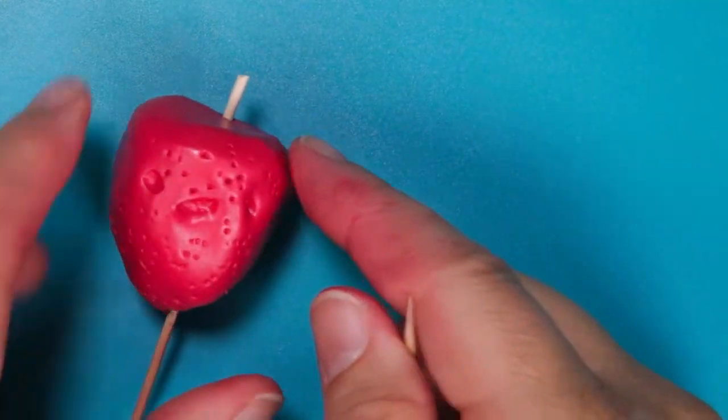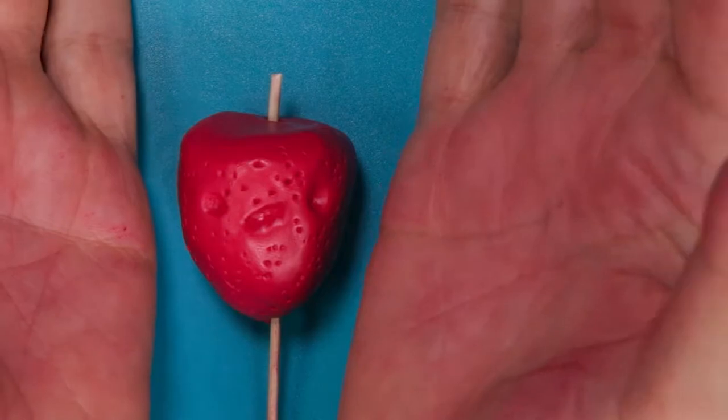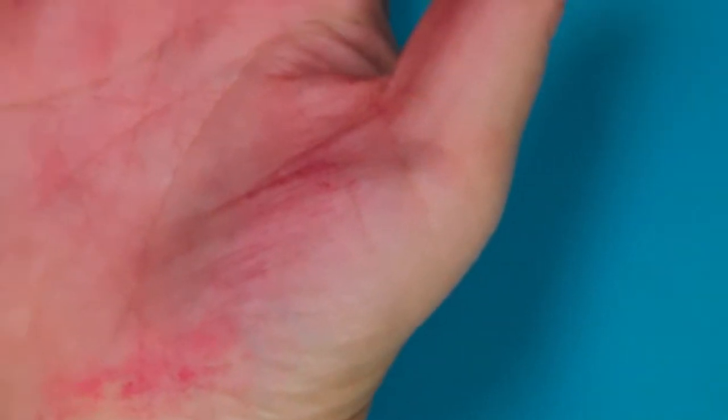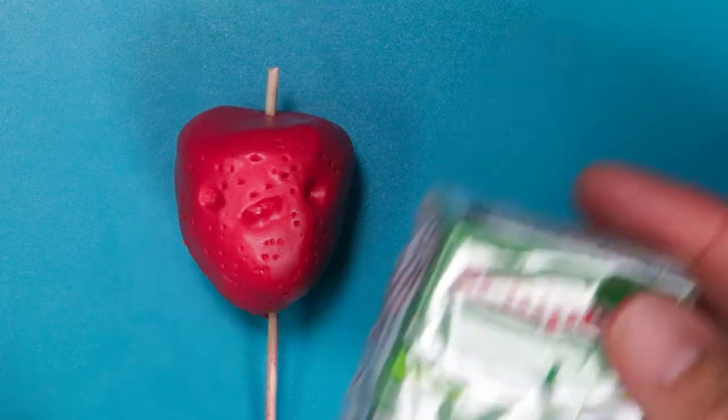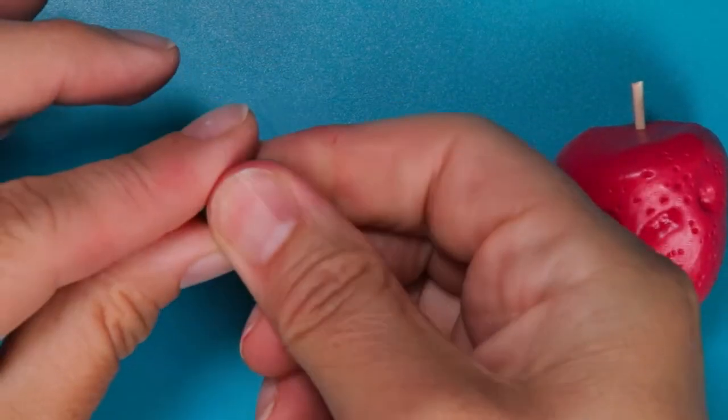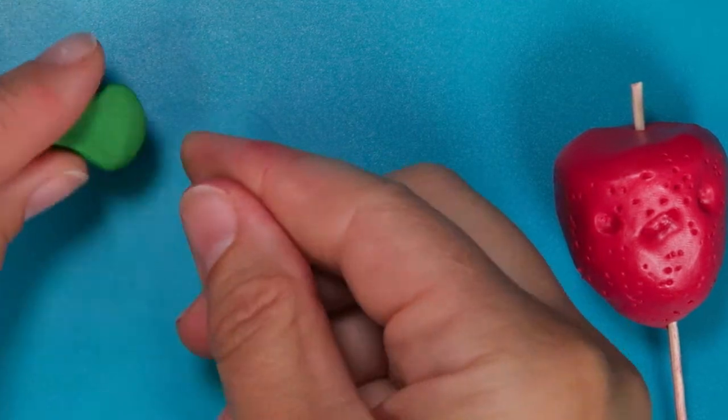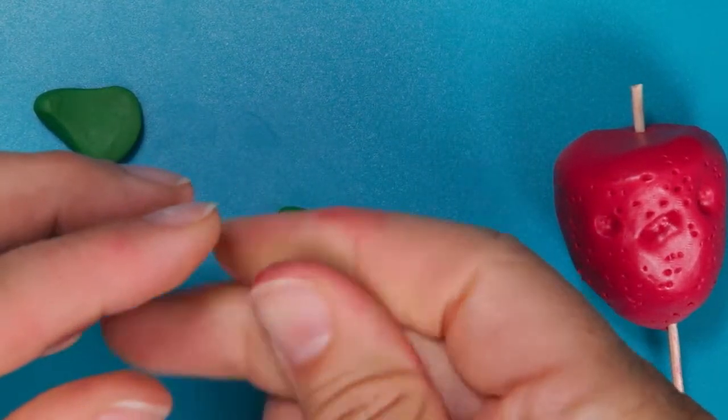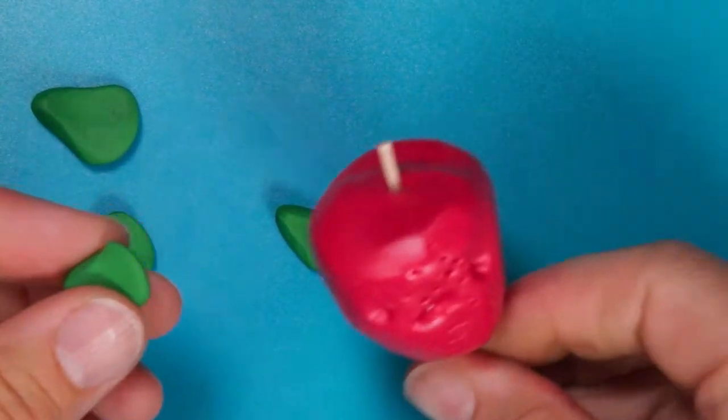Before we move into our leaves and our stem, you'll want to take a moment to wash your hands because the red clay definitely gets all over. Condition your green clay between your palms to warm it up, and then pinch a little bit of clay off and form a little soft triangle shape between your thumbs and your fingers. Go ahead and do this for around four leaves. If you're nervous, make it five or six.